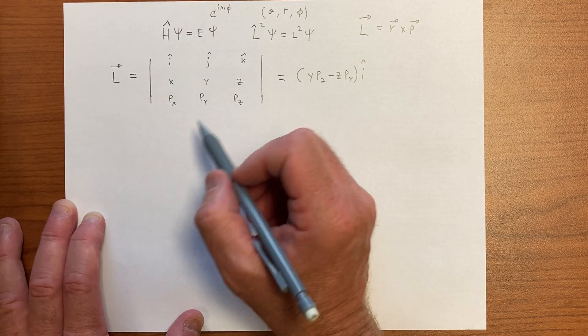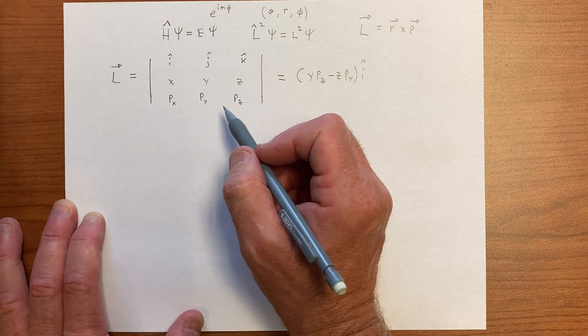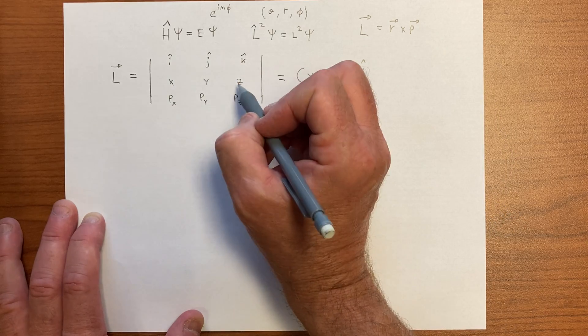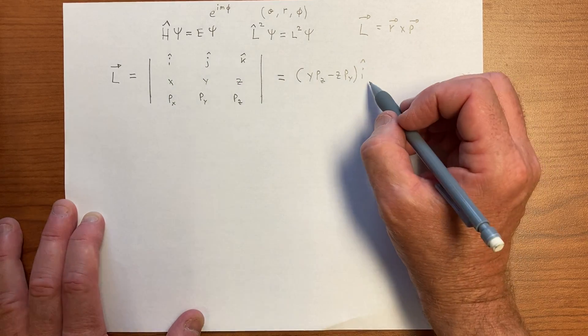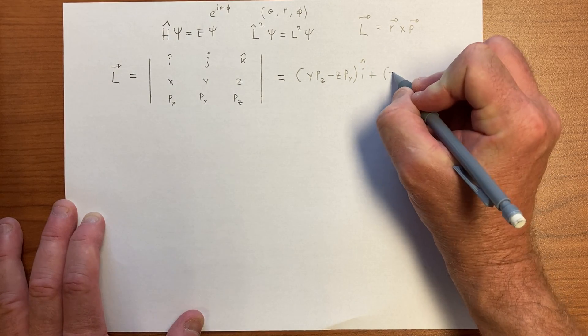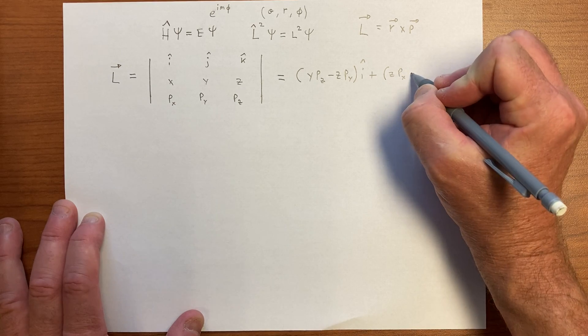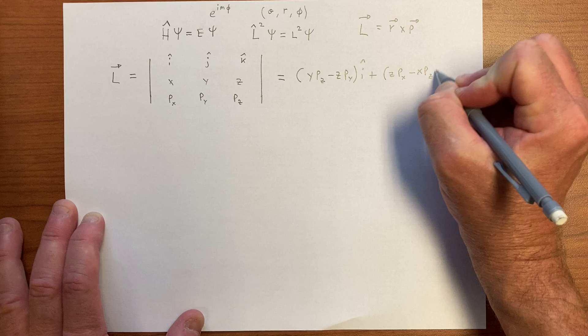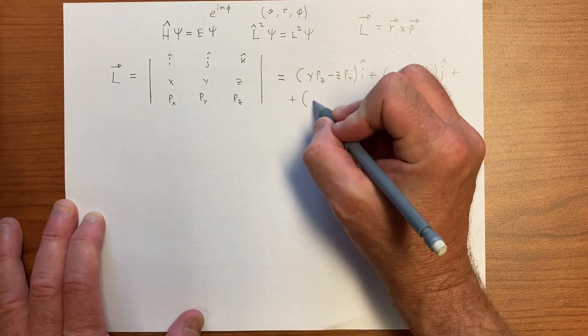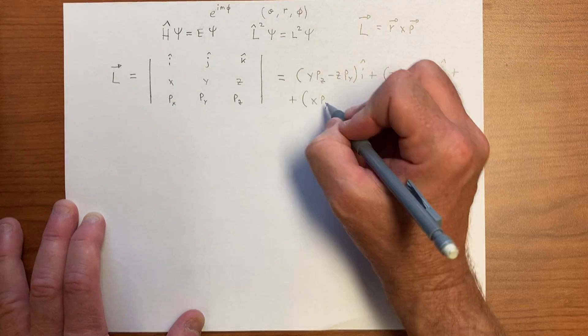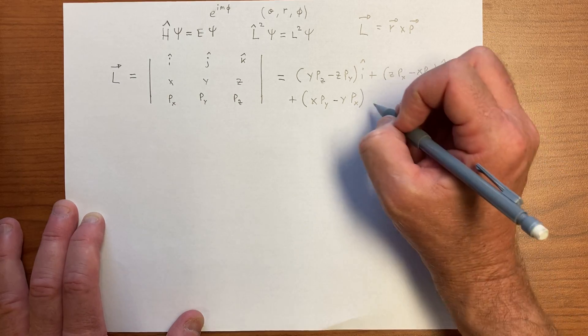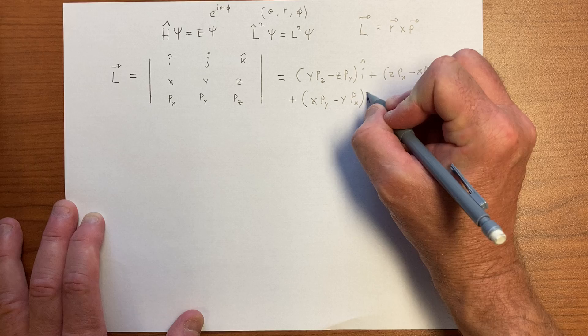It's y p_z, and then when we come back the other way, we get the z p_y, z p_y with a minus sign, that's the x component. Then we have z p_x minus x p_z, that's the y component, plus x p_y minus y p_x, that's the z component, so we have k hat there.